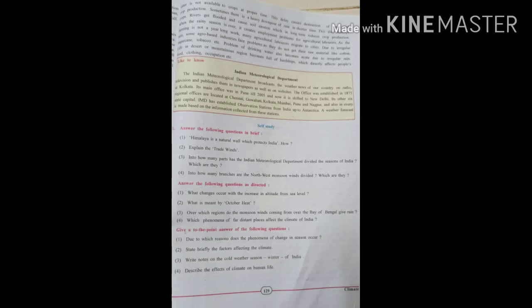Fourth question, how many branches are southwest monsoon winds divided? In the question it's wrong, instead of north you have to write south. Page number 126, last two lines. Due to the peninsular shape of south India, the southwest monsoon winds are divided into two parts: Arabian Sea currents and Bay of Bengal current. What changes occur with increase in altitude from sea level? Page number 122, third factor altitude. What do you mean by October heat? Page number 128. Soil contains moisture, daytime temperature increases, and that is called October heat, Bhadar Viyota. Over which region do monsoon winds coming from the Bay of Bengal give rain? Page number 128. Bay of Bengal currents cross West Bengal, Bihar, Uttar Pradesh, Punjab, reach Haryana.